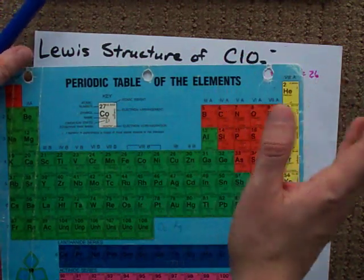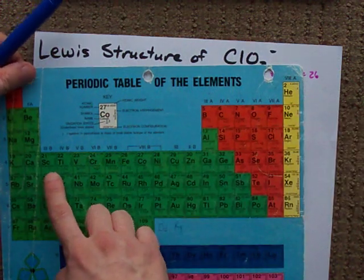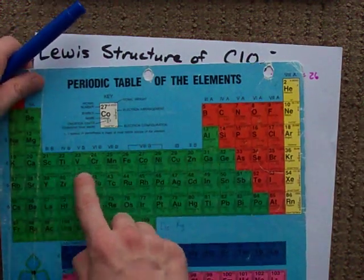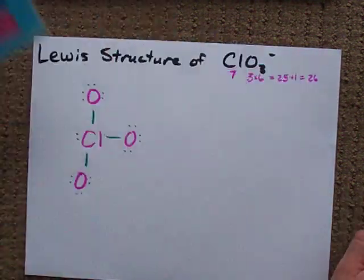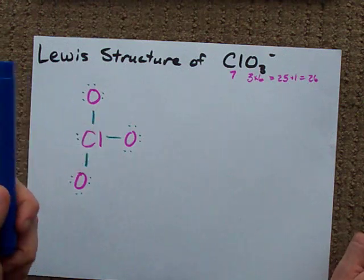The reason, if you care, is because there's an extra subshell called the 3D subshell as soon as you get to the third row. But you don't care, you just want the Lewis structure, right?